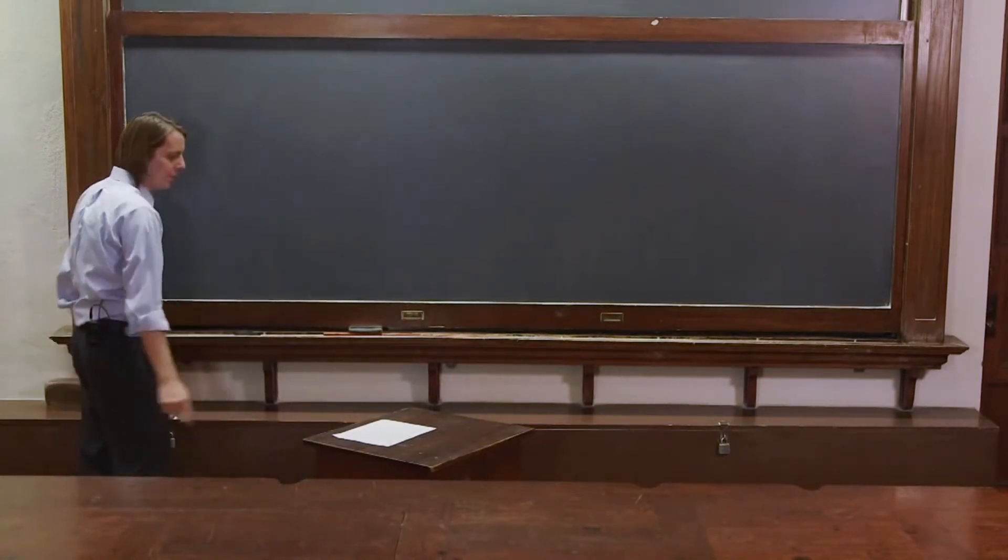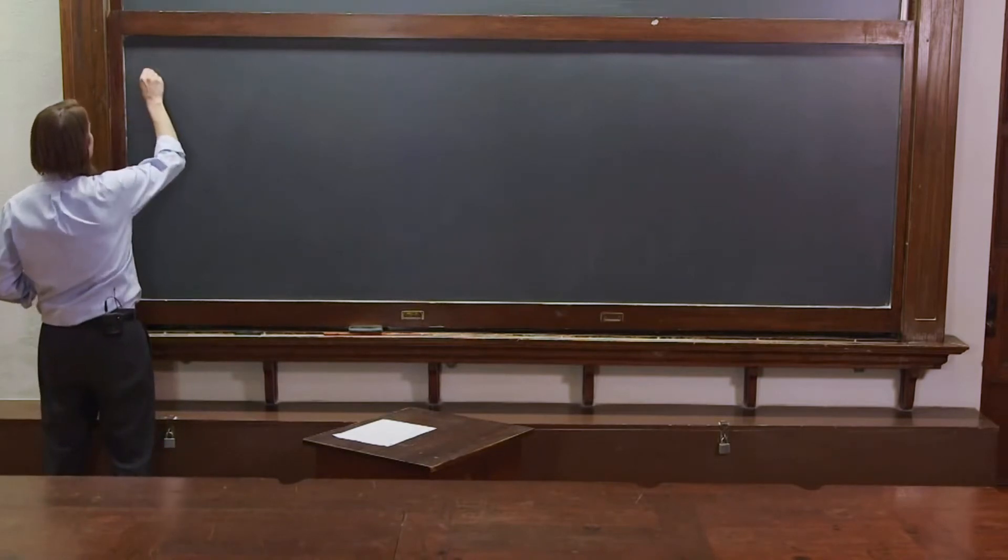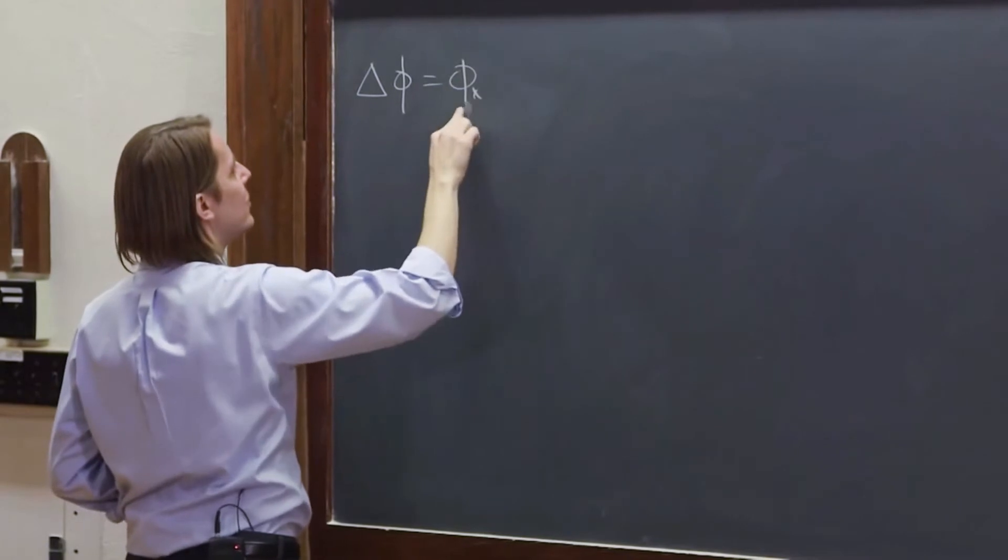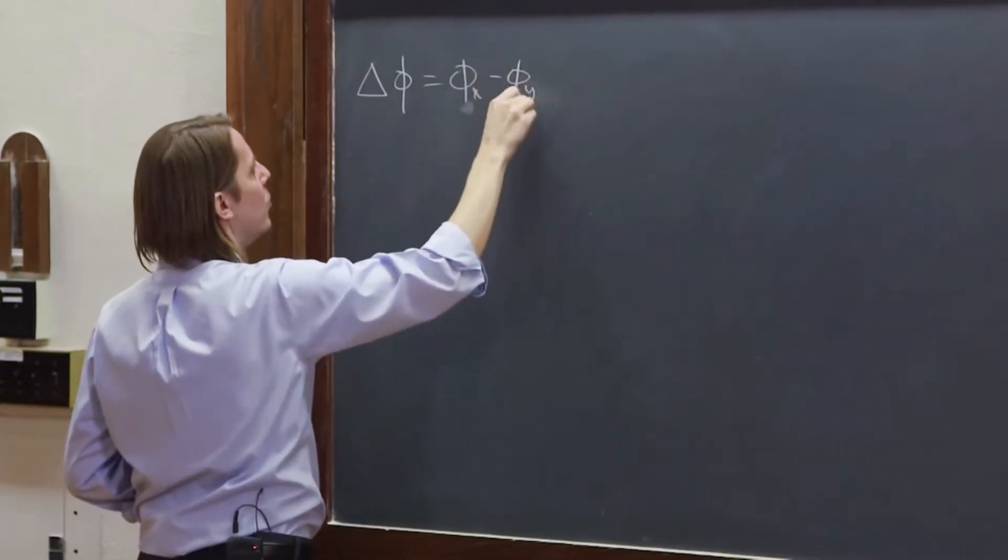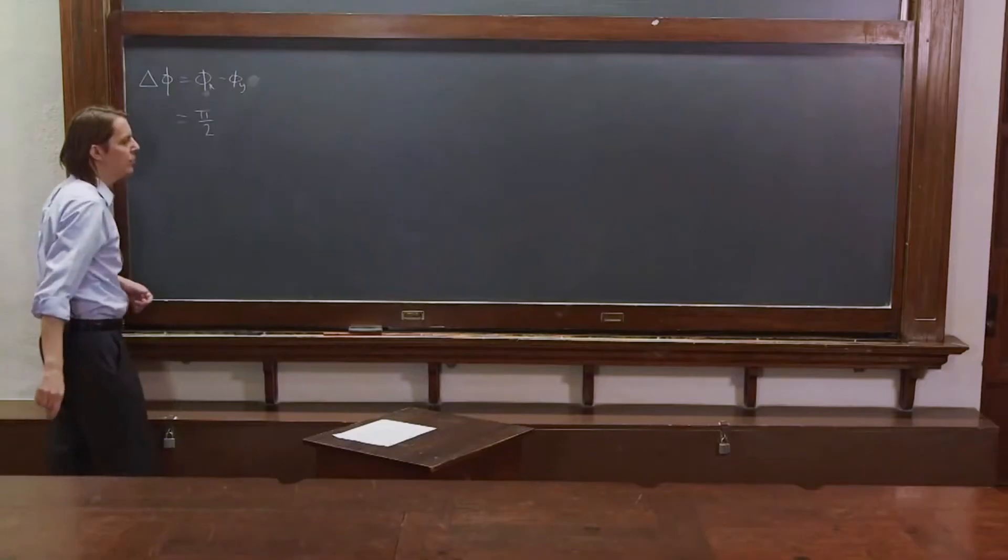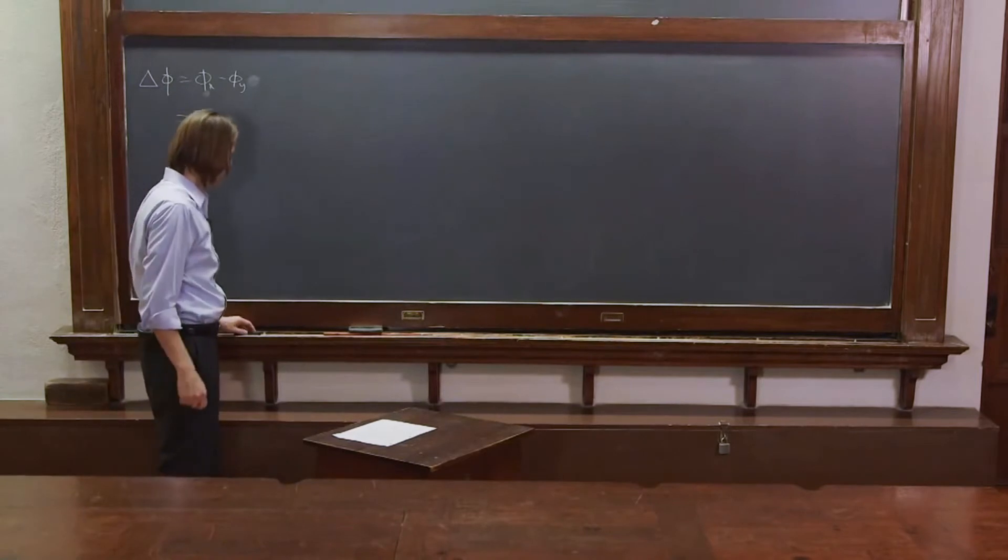Now, finally, we're going to do something more interesting. And we're going to say, what if our delta phase, phase difference, which we'll define as phi X minus phi Y, what if it equals something other than zero? For instance, what if it equals pi over 2? 90 degrees, the difference between a sine and a cosine.